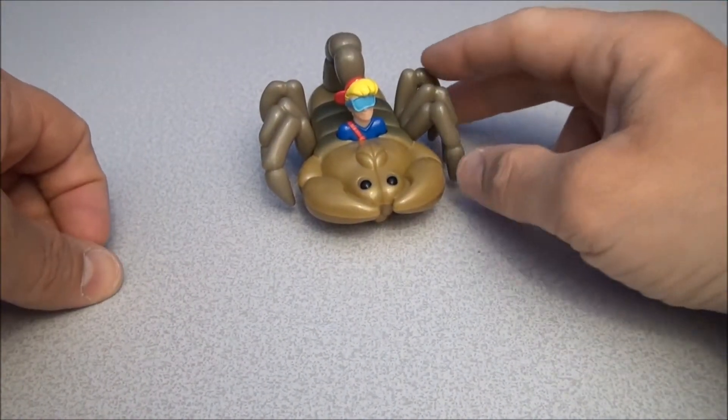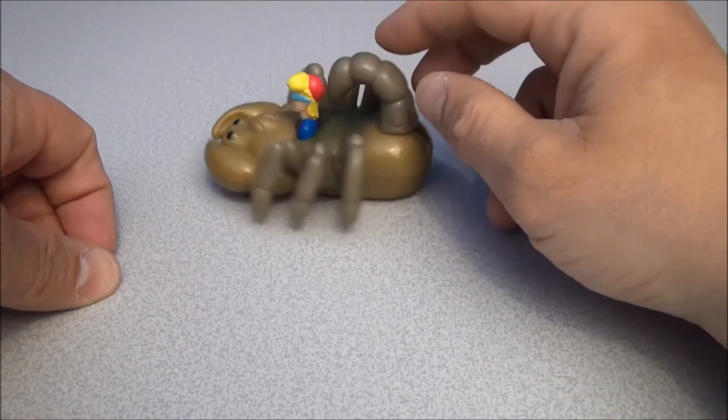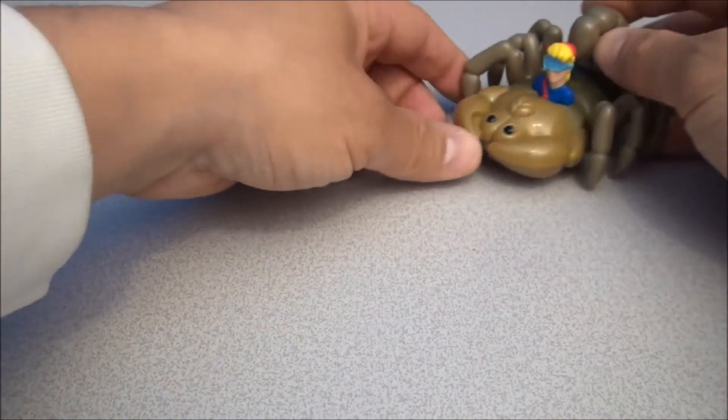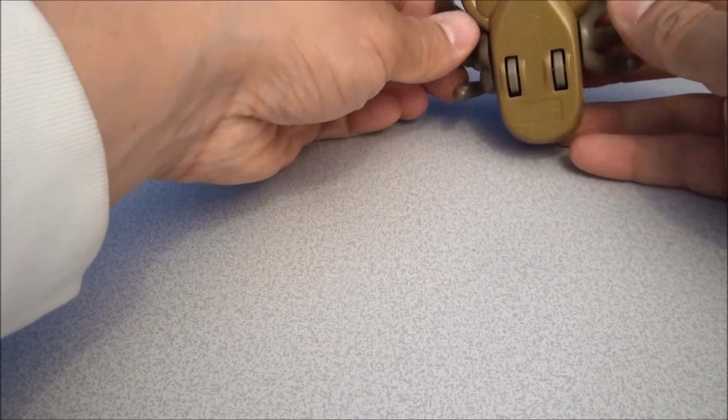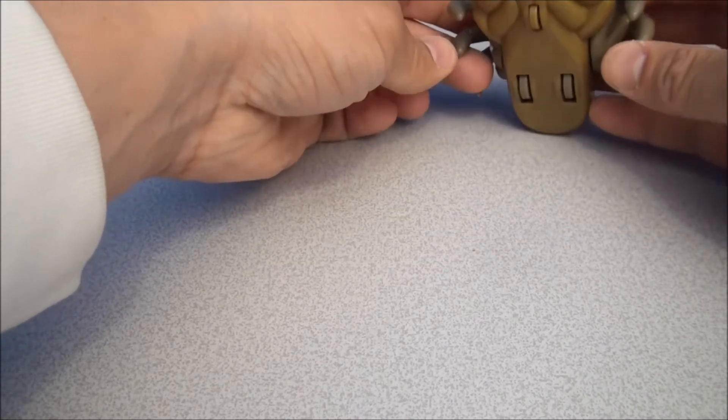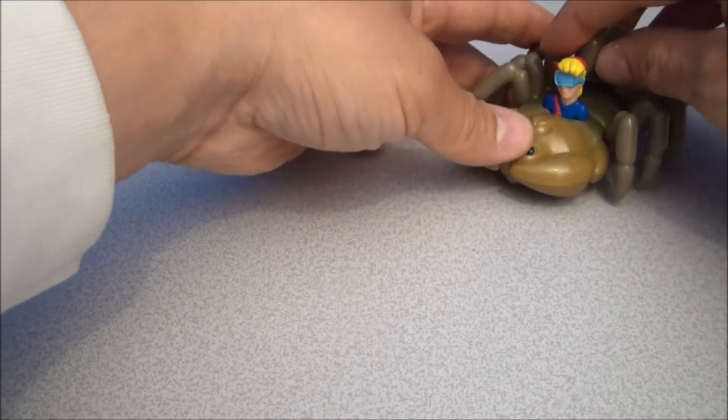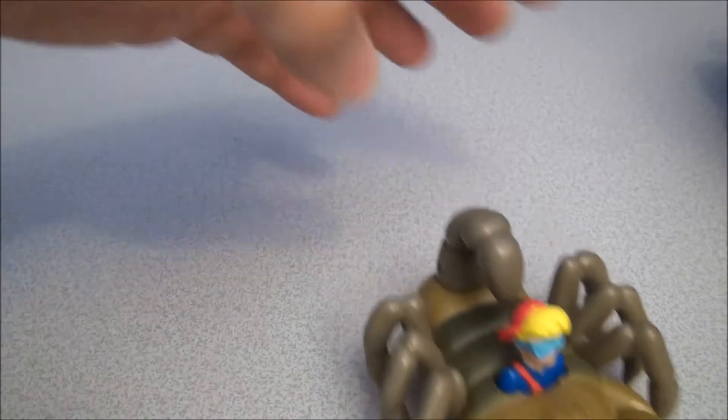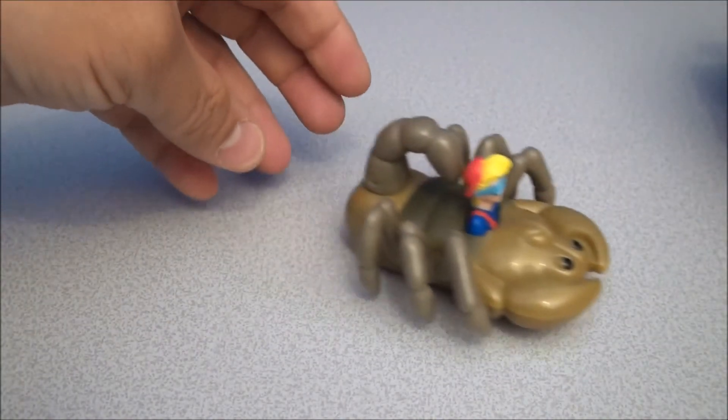Next up we have Kid Vid riding a scorpion. And scorpions are too close to spiders for me so they also could creep me out. He's got some little rubbery legs here, actually kind of pointy. If you see some wheels on the bottom, what you do is you grab the scorpion tail and this thing, it really gains a lot of momentum. It will go flying across your table.